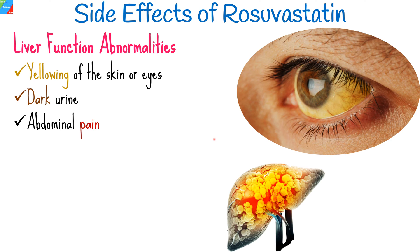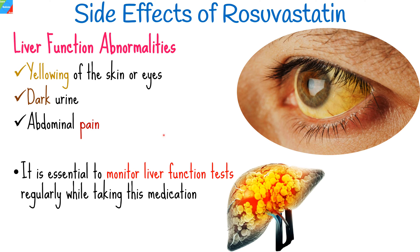In rare cases, rosuvastatin may lead to liver function abnormalities. If you experience symptoms such as yellowing of the skin or eyes, dark urine, or abdominal pain, it is crucial to seek immediate medical attention. Regular monitoring of liver function tests is necessary while taking this medication.